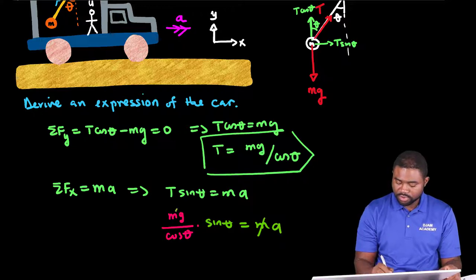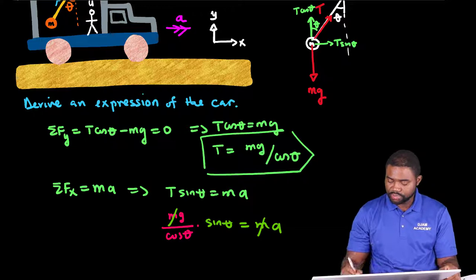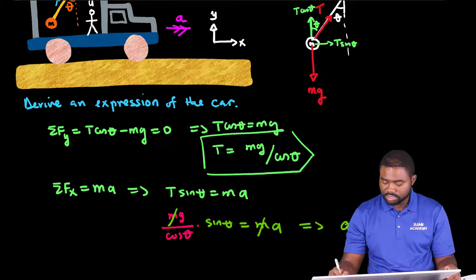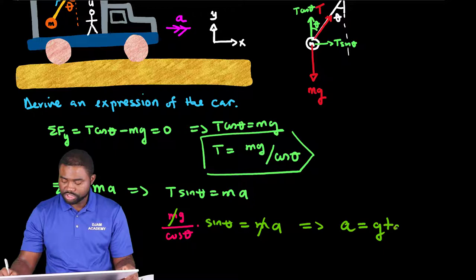The m's can cancel. Sine over cosine theta is tangent. So this implies that the acceleration of the car is given by g times the tangent of theta.